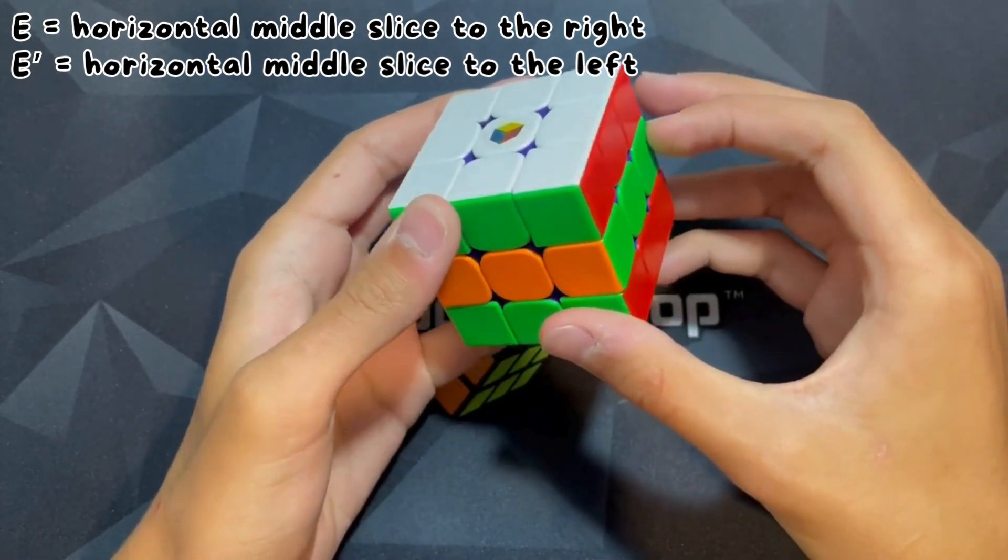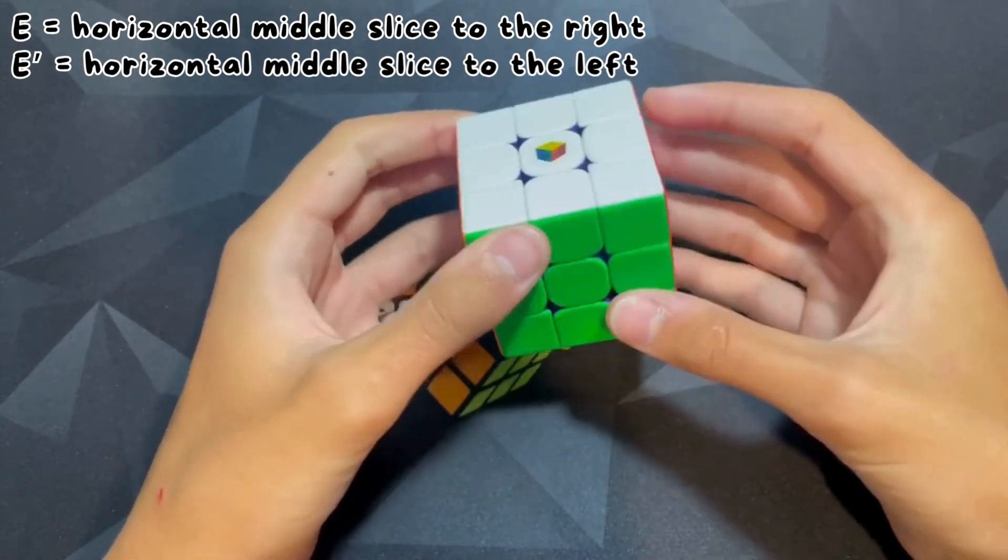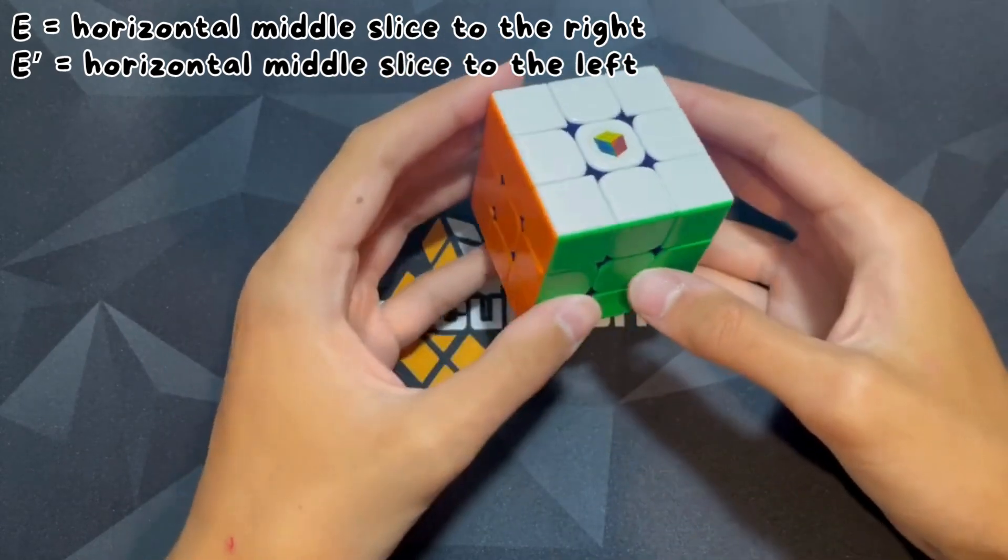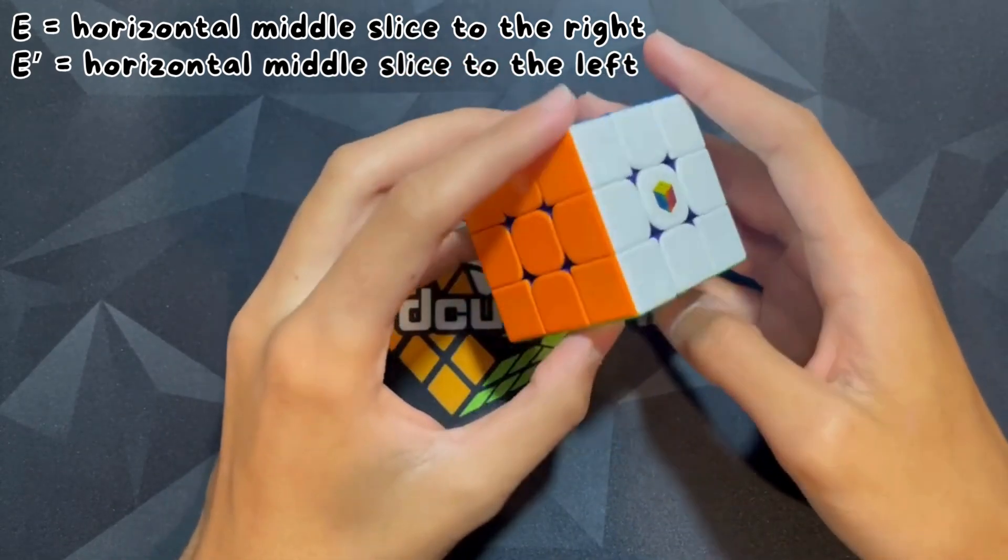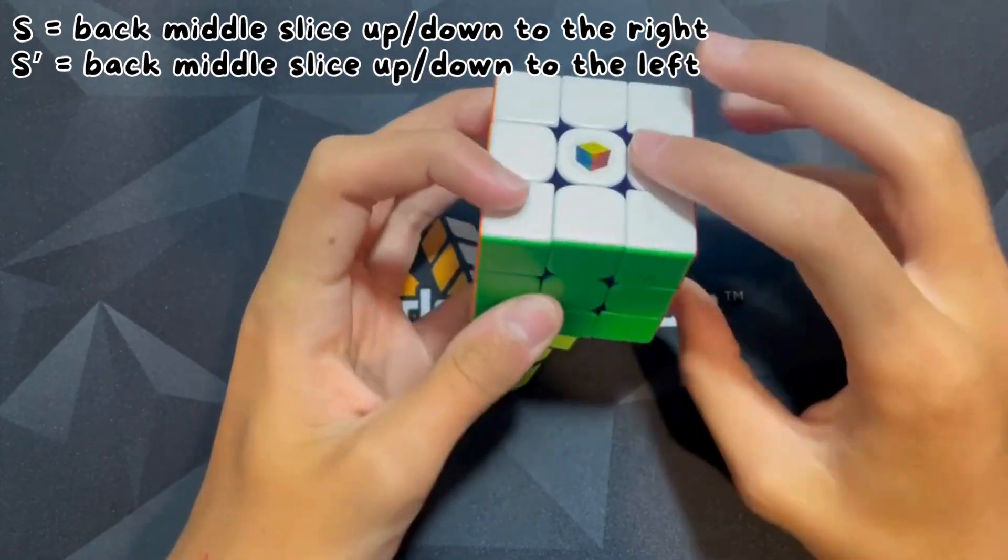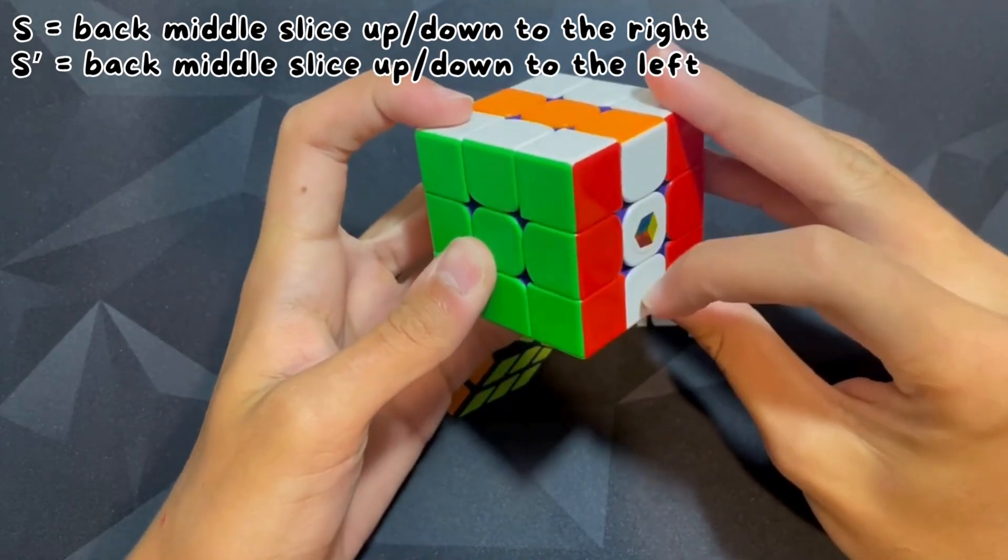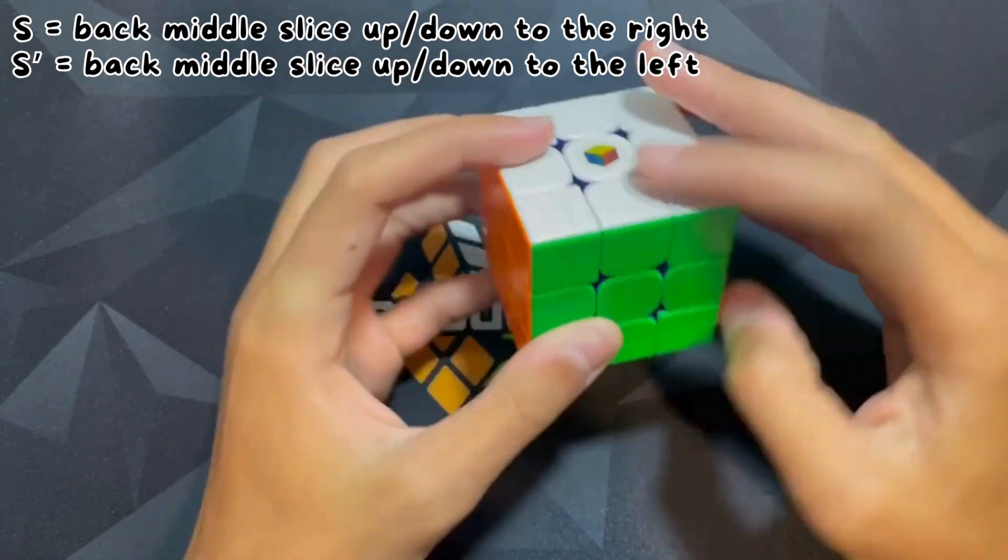So then S. S is where you turn this back middle layer right here down to the right. S prime would be down to the left, or up to the left if it's already like that.